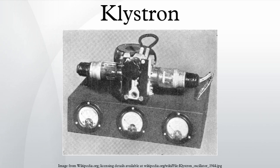The spent electron beam, with reduced energy, is captured by a collector electrode. To make an oscillator, the output cavity can be coupled to the input cavity with a coaxial cable or waveguide. Positive feedback excites spontaneous oscillations at the resonant frequency of the cavities.